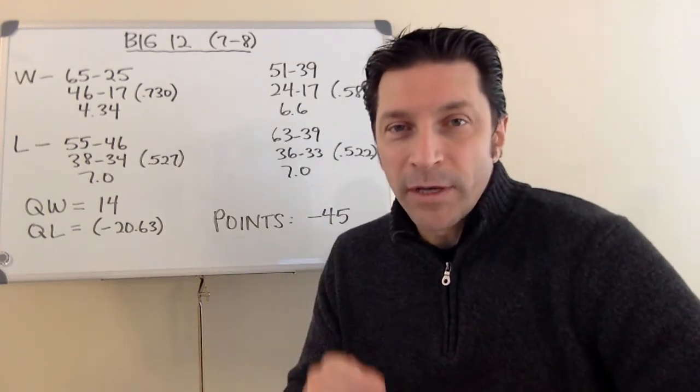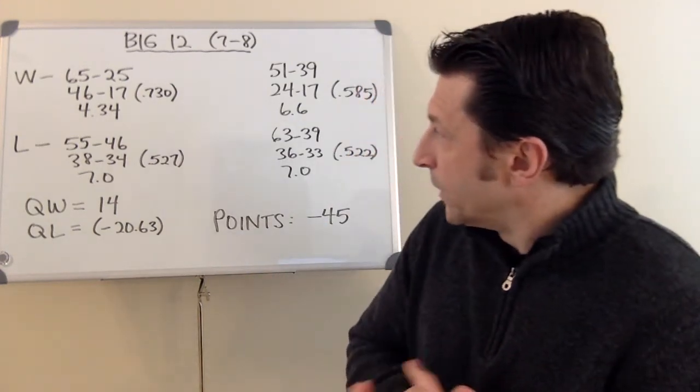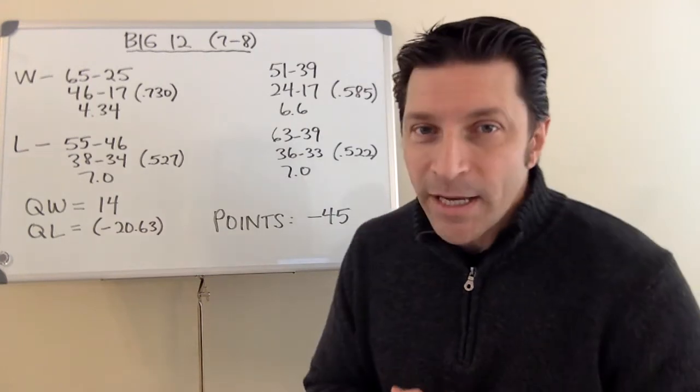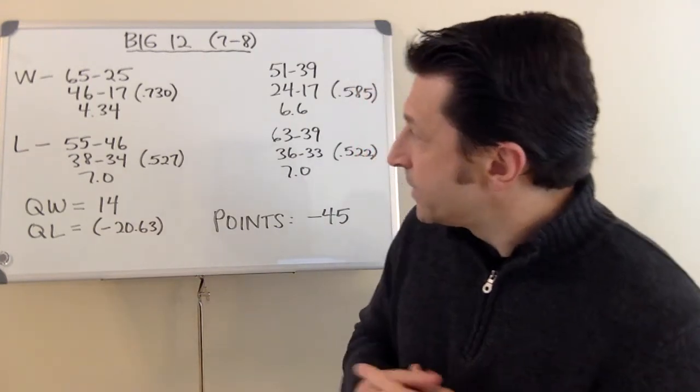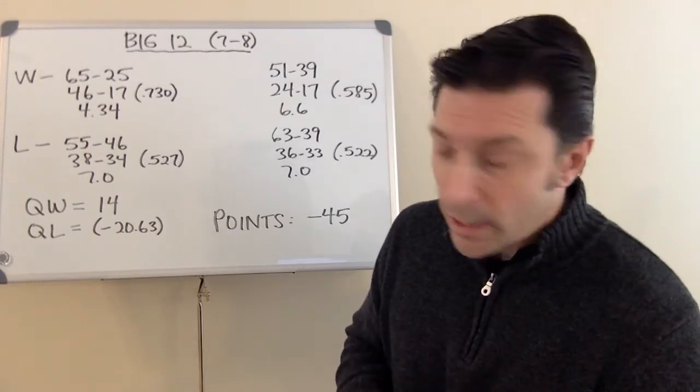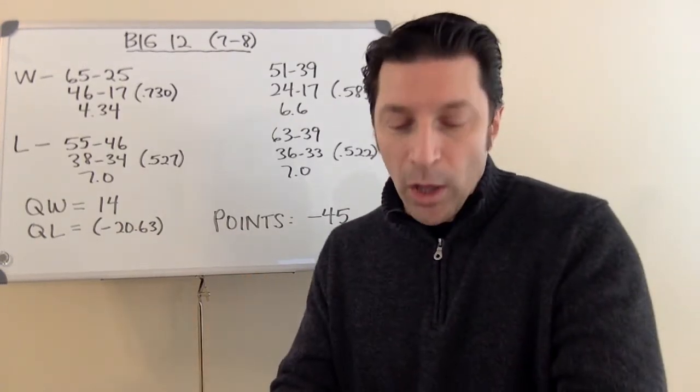The Big 12 went 7-8 against the ACC, the Big Ten, the SEC, and the Pac-12 this past season. That includes postseason play. So the wins for the Big 12.